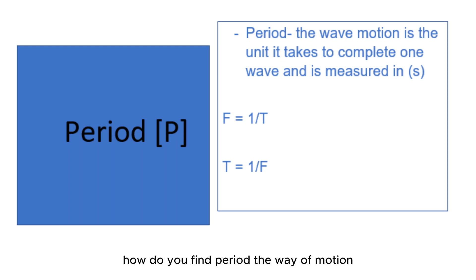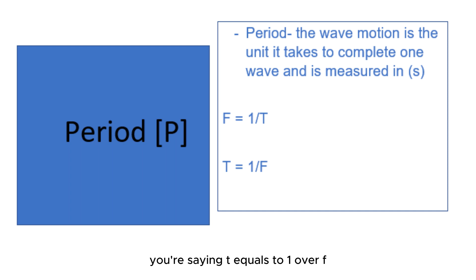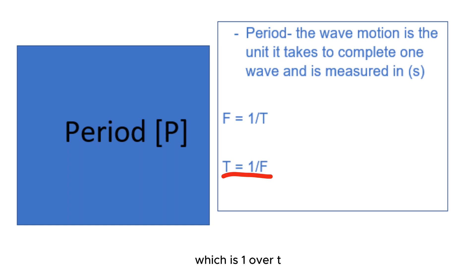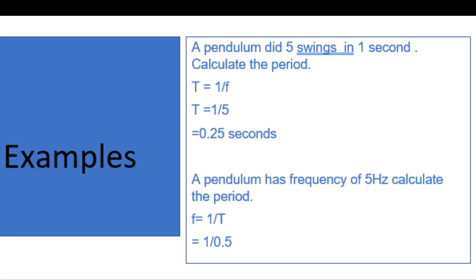The period of a wave motion is the time it takes to complete one wave, and it is measured in seconds. The formula for period is T equals one over f, and frequency is one over T. Those are the two equations we are going to use.